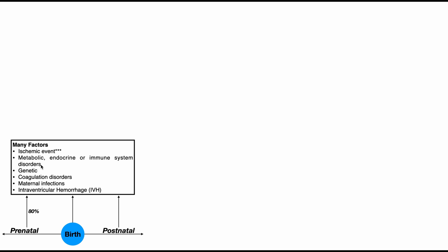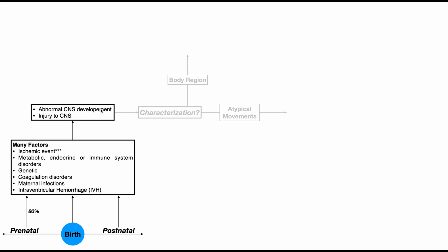You can have metabolic, endocrine, or immune system disorders, straight genetics, coagulation disorders, maternal infections, and even an intraventricular hemorrhage — these are all things that can trigger cerebral palsy. In some way, these damage a specific part of the brain, either causing direct damage or abnormal central nervous system development, which then triggers cerebral palsy.